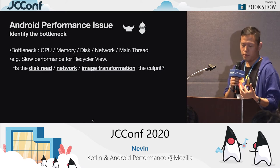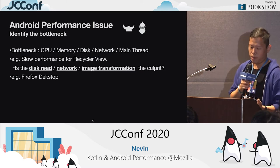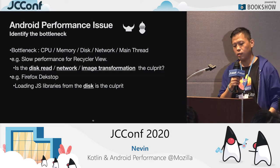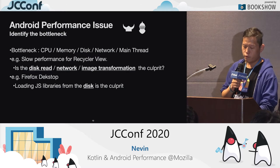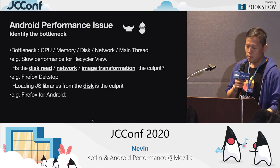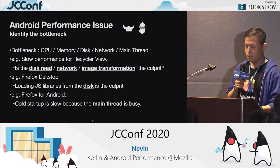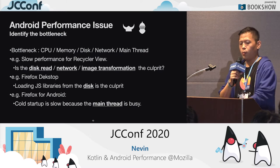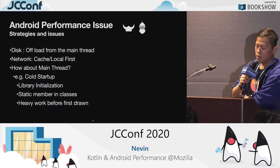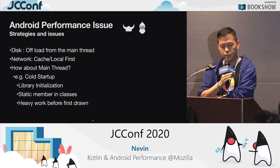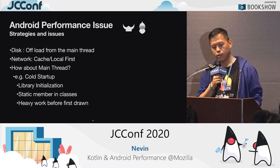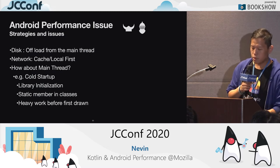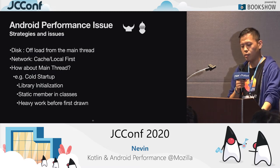For Firefox Desktop, we found the JavaScript library loading was a problem — you load JavaScript libraries one after another, so disk could be the bottleneck. For Firefox for Android, we found cold startup is slow because the main thread is busy. These are the strategies we use to solve performance issues. For disk: offload from the main thread. For network: caching or a local-first strategy like Room. For main thread: library initialization is one of the big problems.